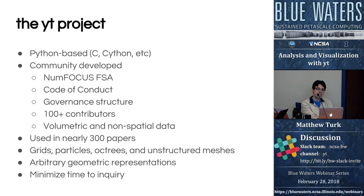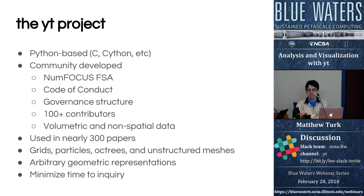The primary applications are volumetric and non-spatial data — data that can be organized by a de facto or de jure metric, some system where you can describe a distance measurement between different points of data, whether or not that distance measurement is actually a spatial distance metric. It's been used in about 400 papers.